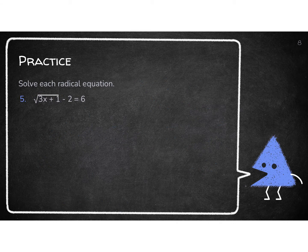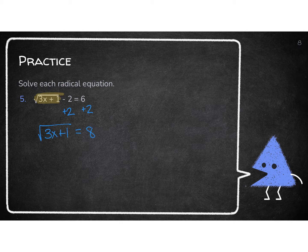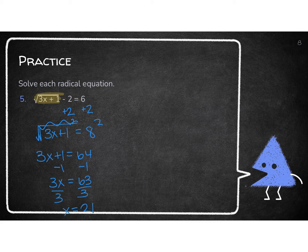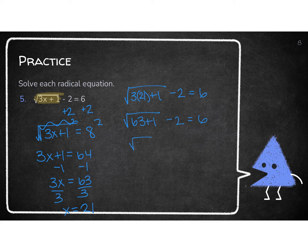Let's look at this one: the square root of 3x plus 1 minus 2 equals 6. That minus 2 is outside the highlighted part, so I add 2 first. I have the square root of 3x plus 1 equals 8. The highlighted part is alone, so I square both sides and get 3x plus 1 equals 64. Subtract 1: 3x equals 63. Divide by 3: x equals 21. We didn't square a negative, so let's check: square root of 63 plus 1 minus 2 — that's square root of 64, which is 8, minus 2 equals 6. Good answer.